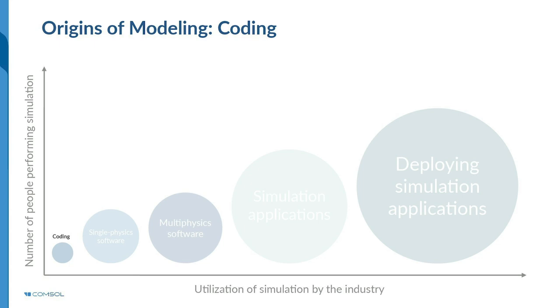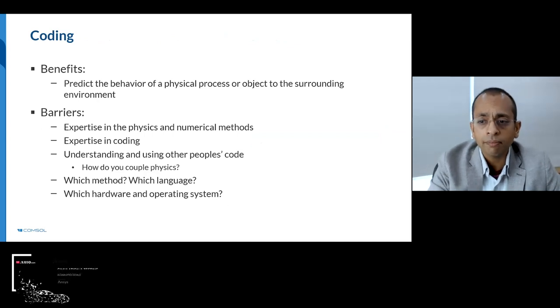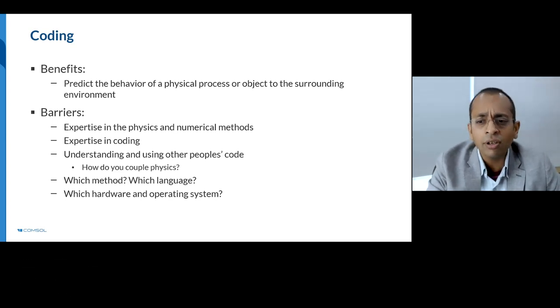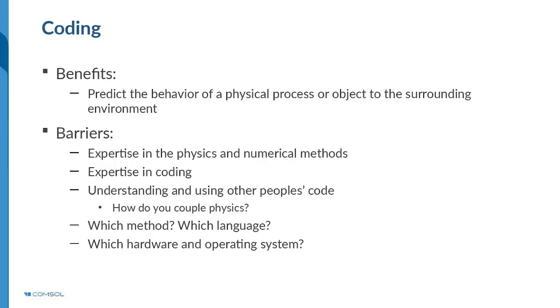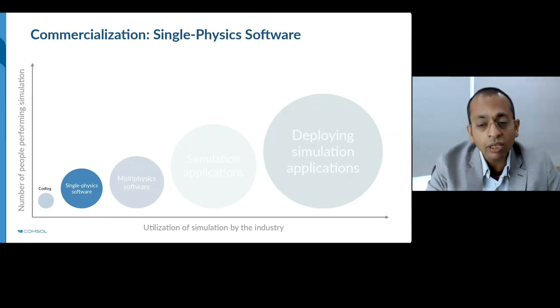Before we look at where we are today and what the future is, let's take a look back at where it all began way back in the 1950s. Some of the first physical applications of numerical methods began with the aerospace industry, closely followed by the nuclear industry. While this provided great insights into physical behavior which was earlier impossible — mostly in structural mechanics — there were still several drawbacks. Expertise was needed in the physics, the numerical methods, as well as in coding, along with questions about which language, hardware, and operating system to use.